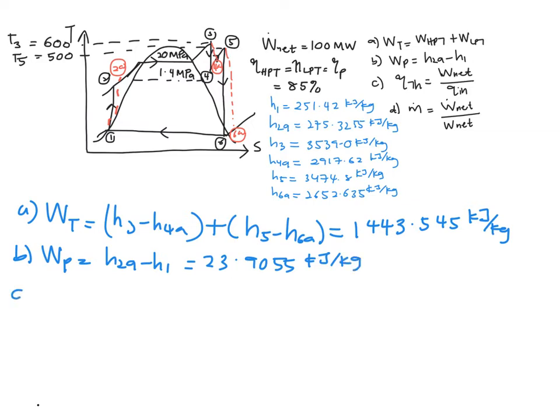And then C is to find your thermal efficiency, so you will need to have your work net and your Q in. So, work net is actually the summation of your turbine minus the work of your pump.